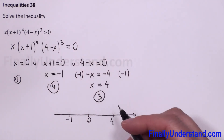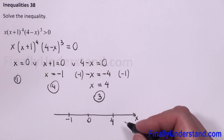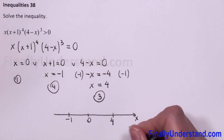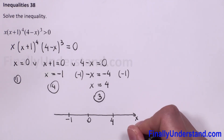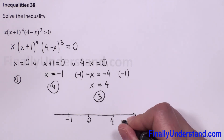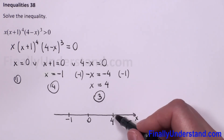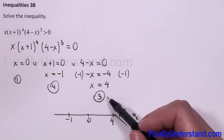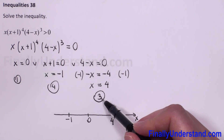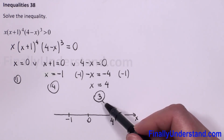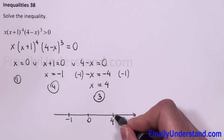Negative x raised to the third power is still negative, and negative times positive is negative. So in this example we have to start drawing our graph from a negative value — that means from below.